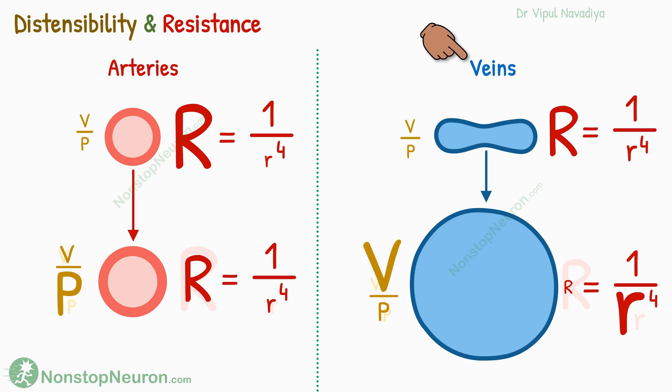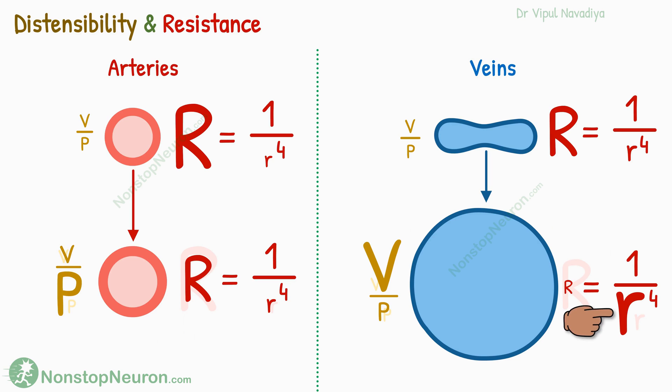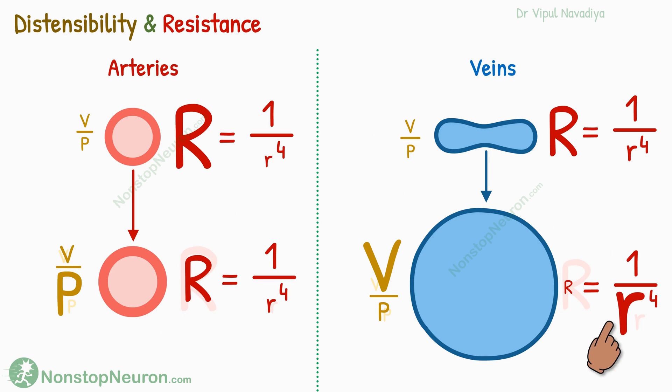Now let's discuss the veins. They are more distensible. Even with a small increase in pressure, they distend so much—or in terms of radius, there is a large increase in radius. Now the resistance is already related to the radius to the fourth power, and here we have a large increase in radius on top of that. So fall in resistance in veins happens like crazy. So definitely the award for resistance is not going to veins.